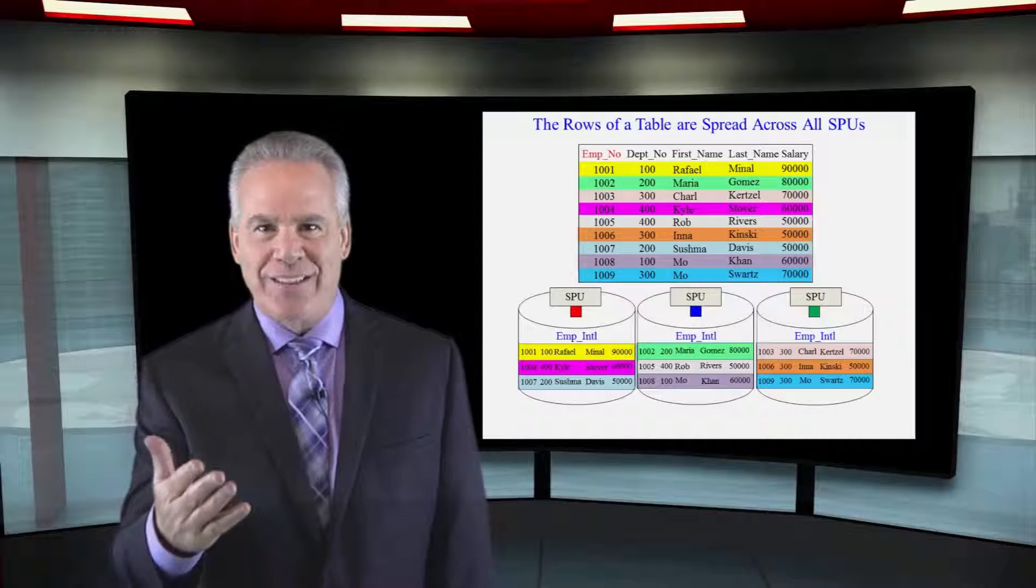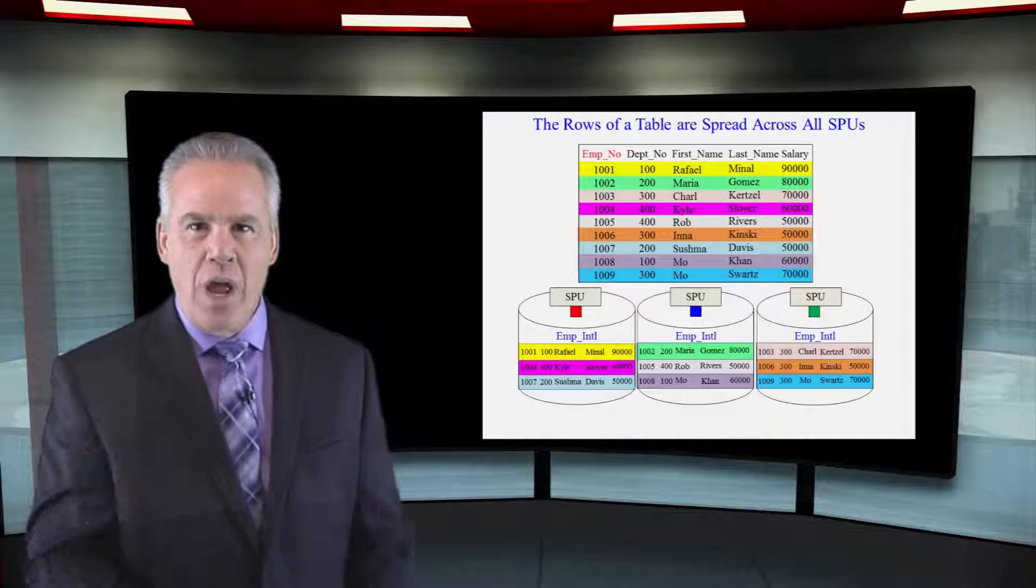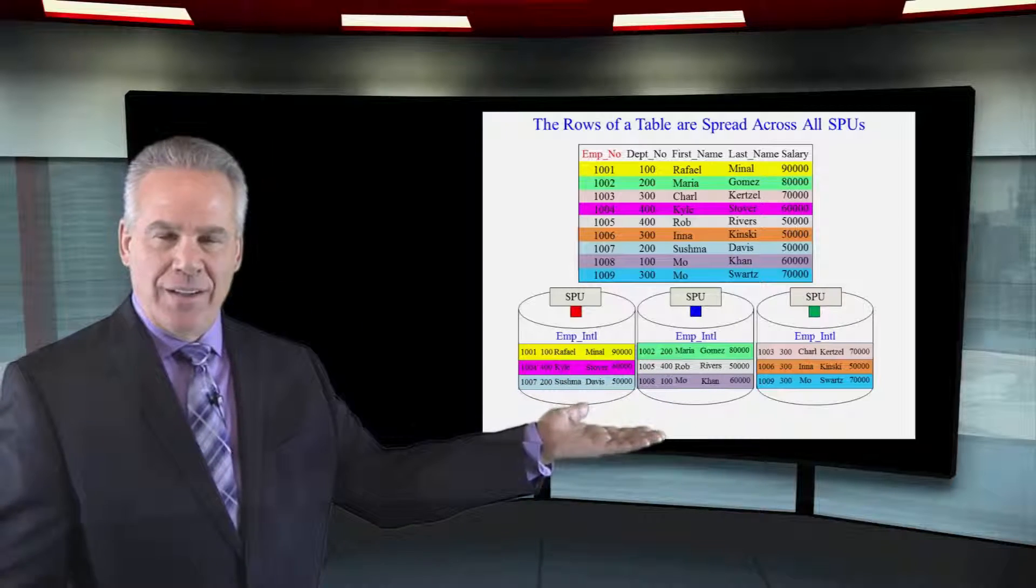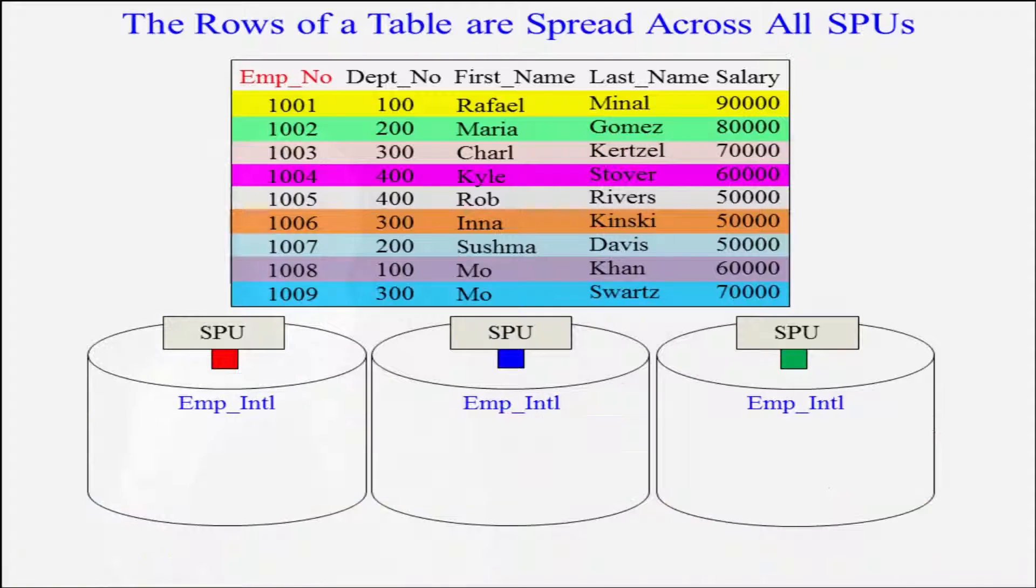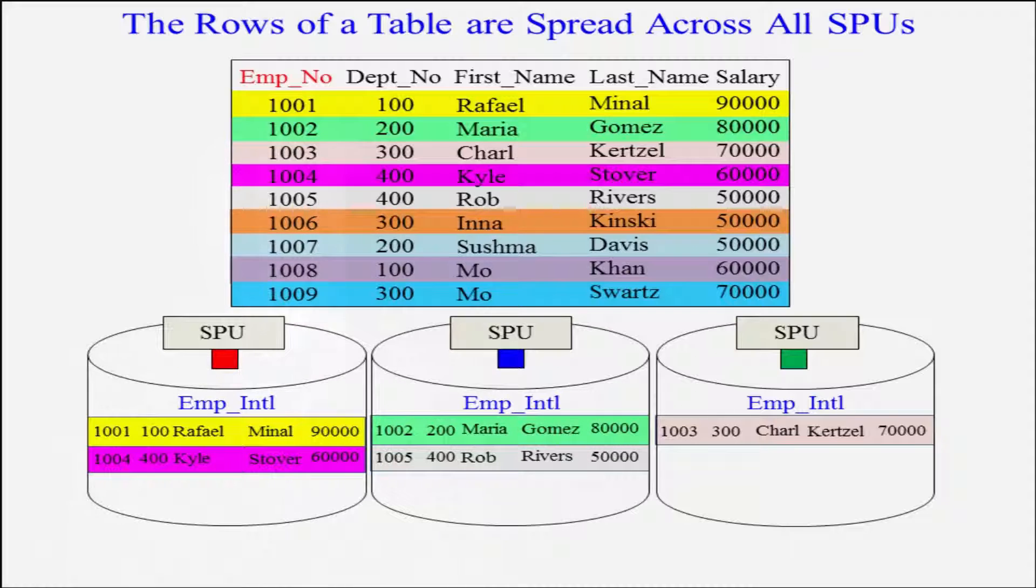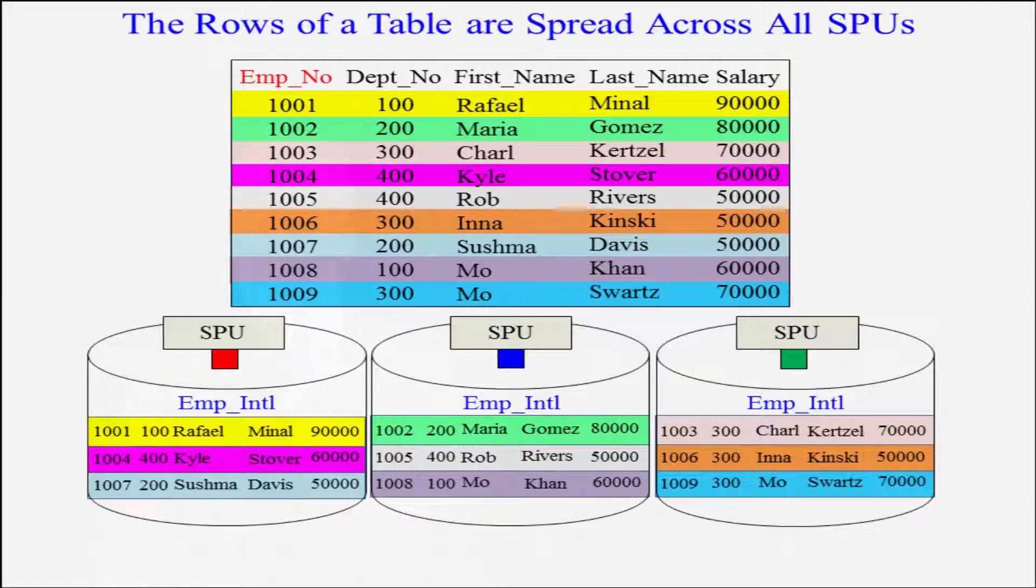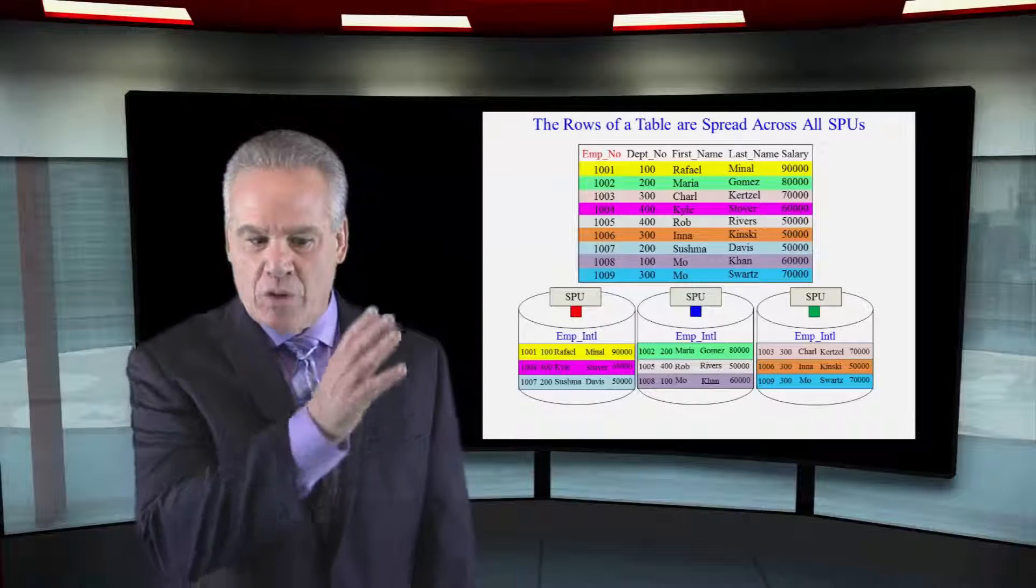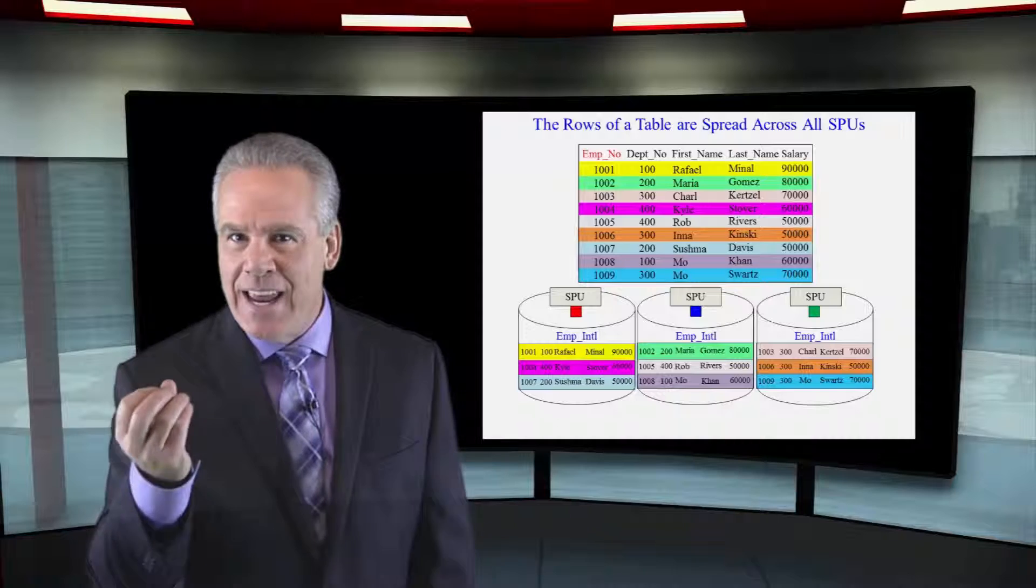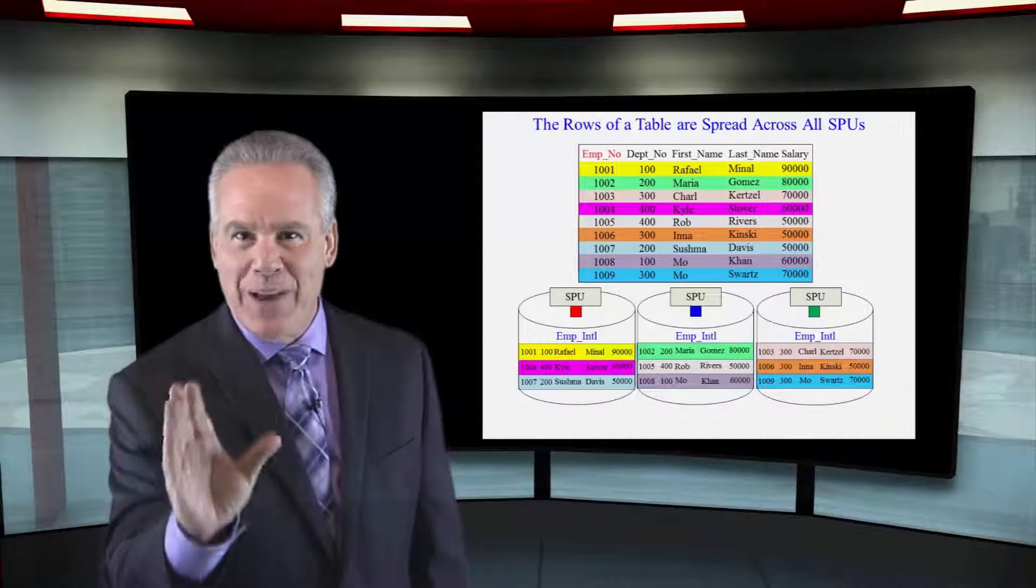Take a look at this. I've color coded it for you. My table has nine rows in it. In this case, I've got three spools. Three rows are going to spool one. Three rows are going to spool two. And three rows are going to spool three. Again, all of the data has been spread across all of the spools. They've got an equal amount of that data and that's perfect for parallel processing.